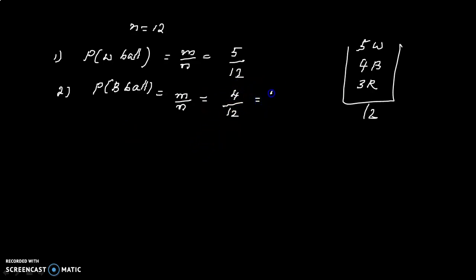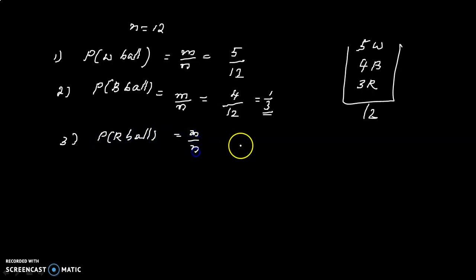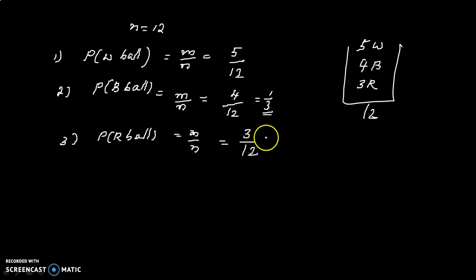4 by 12 equals 1 by 3. For the third question, what is the probability that it is a red ball? The probability is m by n, n is equal to 12. The red ball is the favorable case. There are 3 red balls, so the probability is 3 by 12, which equals 1 by 4.